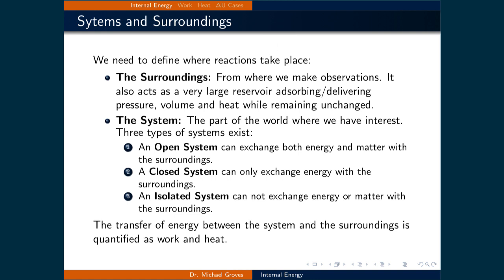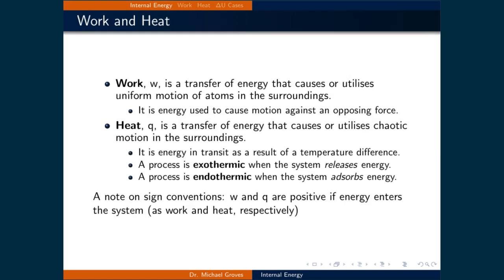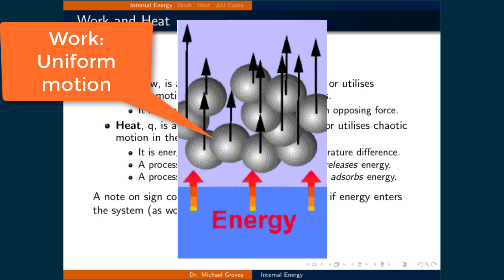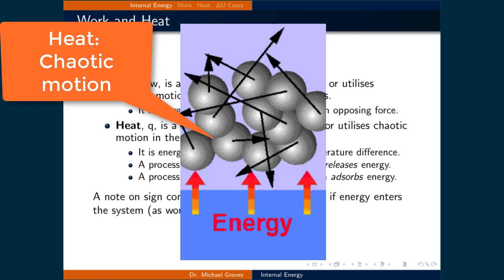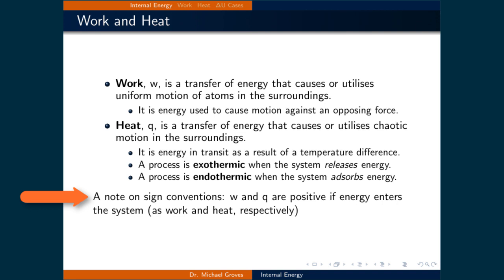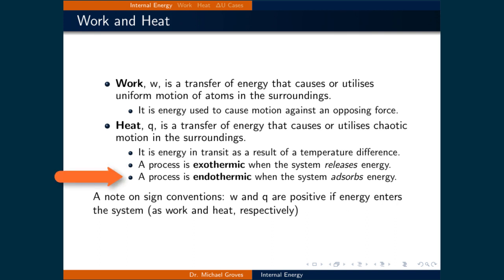Finally, we will quantitatively define work and heat. These two quantities represent the transfer of energy between the system and the surroundings. Work, denoted as W, is a transfer of energy that causes or utilizes uniform motion of atoms in the surroundings — energy used to cause motion against an opposing force. Heat, denoted as Q, is a transfer of energy that causes or utilizes chaotic motion in the surroundings — energy in transit as a result of a temperature difference. Work and heat are positive if energy enters the system. A process is exothermic when the system releases energy, and endothermic when the system absorbs energy.